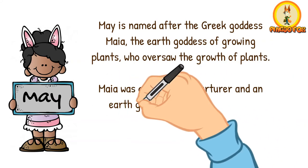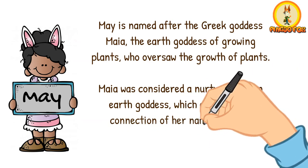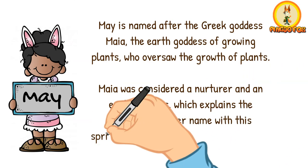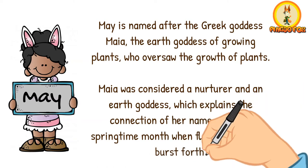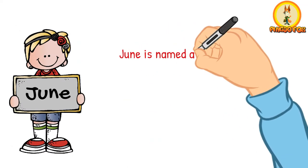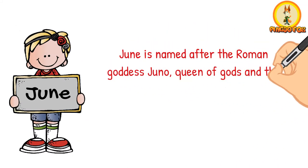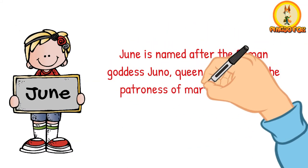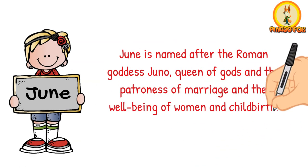Maia was considered a nurturer and an earth goddess, which explains the connection of her name with this springtime month, when flowers and crops burst forth. June is named after the Roman goddess Juno, queen of gods, and the patroness of marriage and the well-being of women and childbirth.